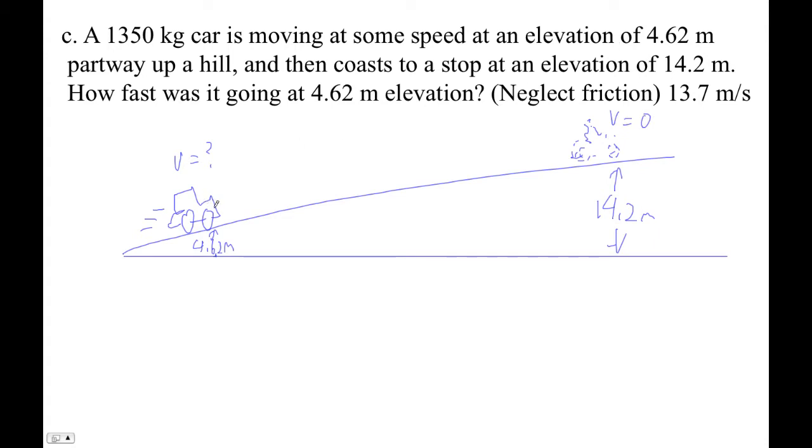Again, you could solve this as a one-to-one by subtracting these two heights. I'm going to solve it as a two-to-one here. So here it's got mgh plus one-half mv squared.